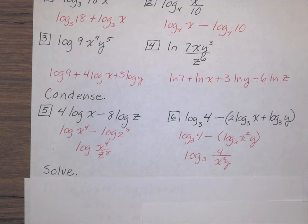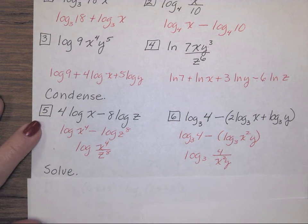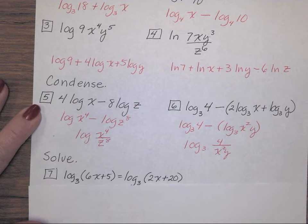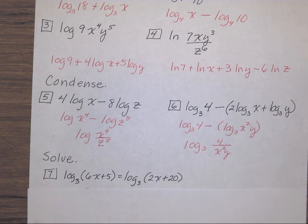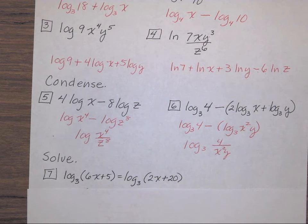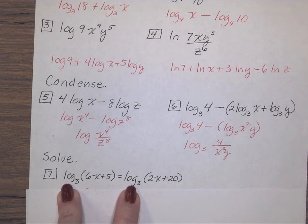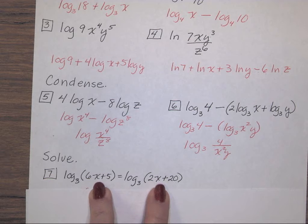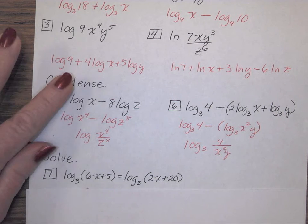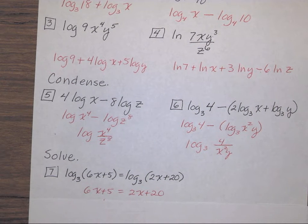Moving on to solving. Number 7. I have log base 3 of, in parentheses, 6x plus 5. And it equals log base 3 of, in parentheses, 2x plus 20. Well, both sides are log base 3. So if I used a base of 3, they would be canceled. And I would just be left with the values in parentheses set equal to each other. So I have 6x plus 5 equals 2x plus 20.